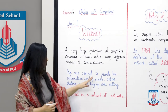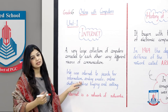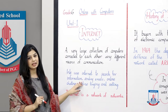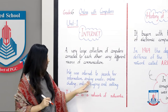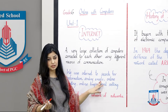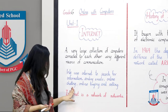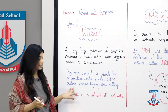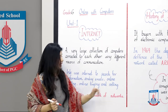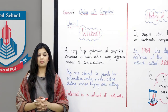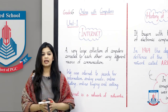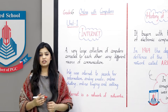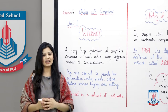We use the internet to search for information, for sending emails, for online chatting, and for online buying and selling. When we talk about online buying and selling, we are talking about e-commerce. This means you can use the internet to send things online and also buy things.